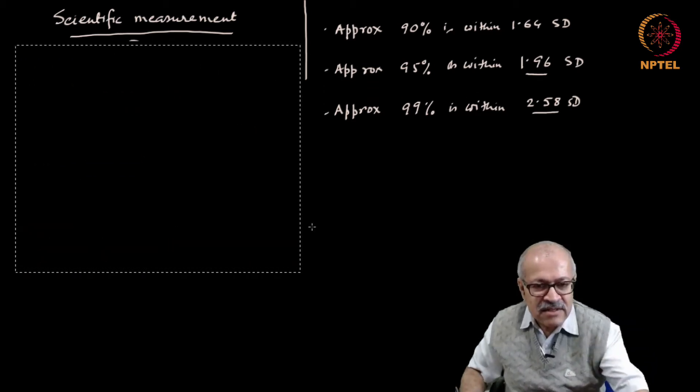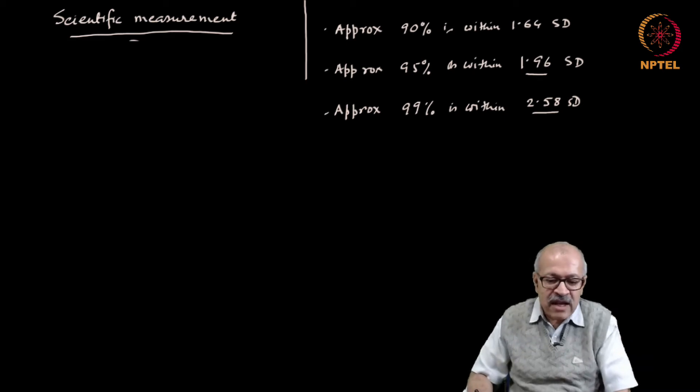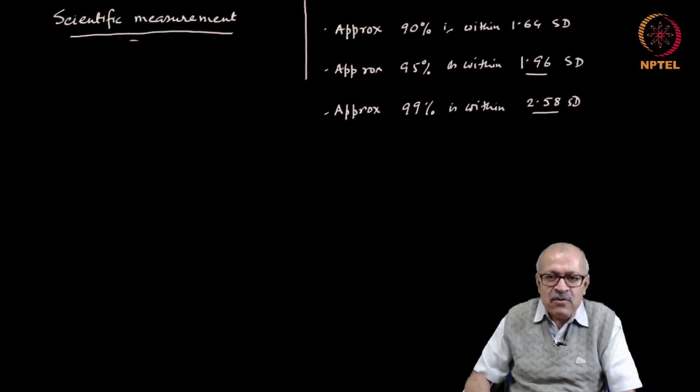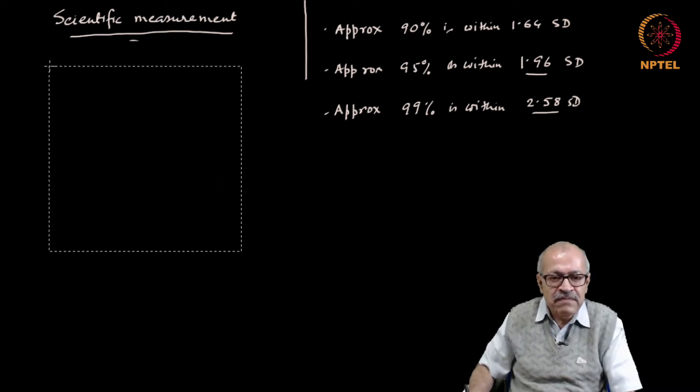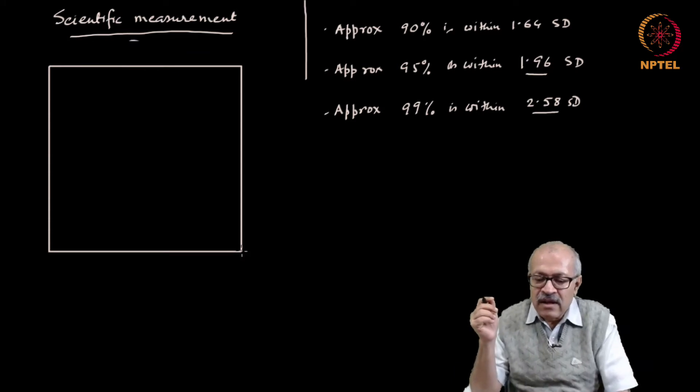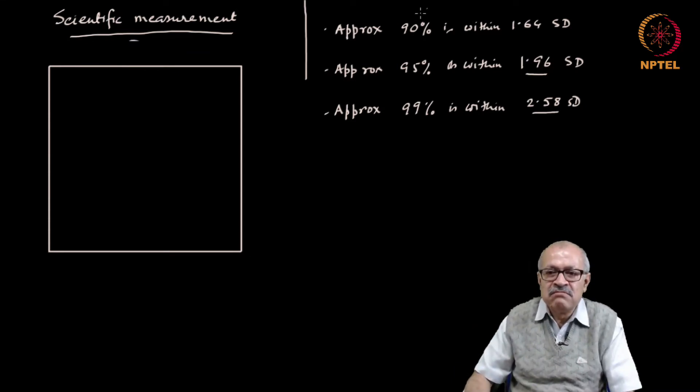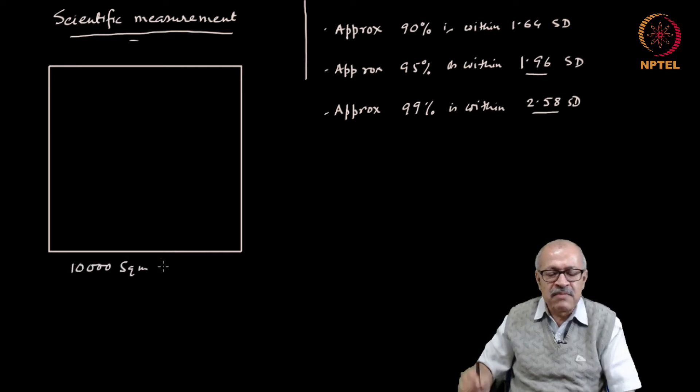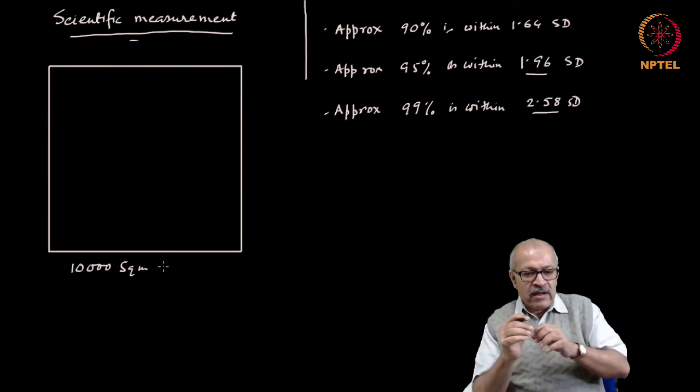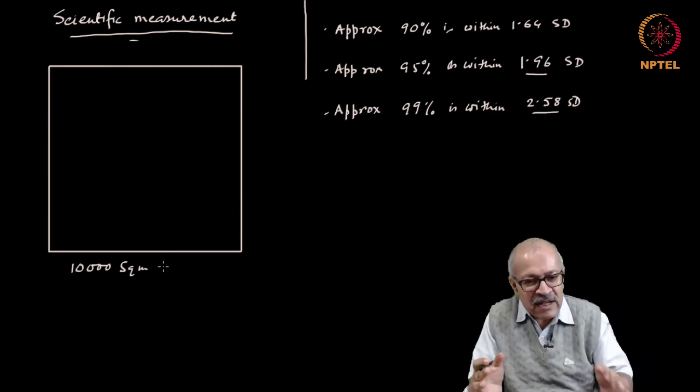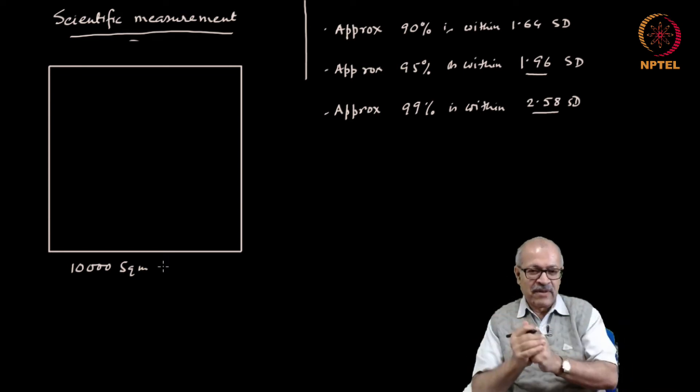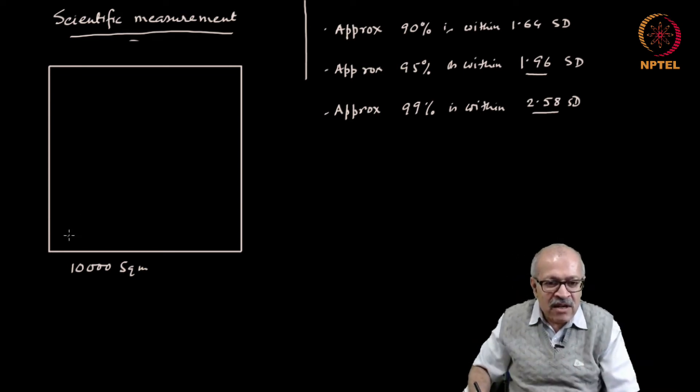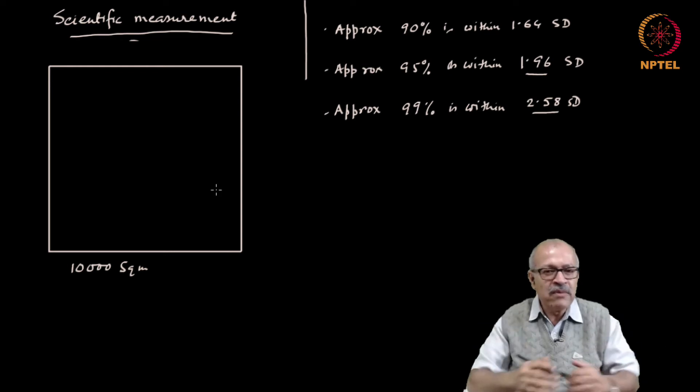How it is actually done is suppose I have a field, suppose I have a square field like this. Suppose it is about this much and I have been asked to find out the character of that soil. How do I do that? Because the character of the soil here will not be the same as here, here, here, it will be different and at different layers it will be different.